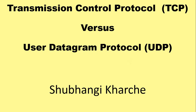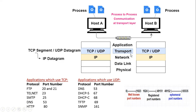Hello everyone. In this video I am going to explain the differences between Transmission Control Protocol and User Datagram Protocol. Both TCP and UDP are protocols at the transport layer of the TCP/IP architecture.